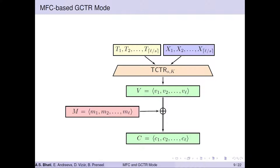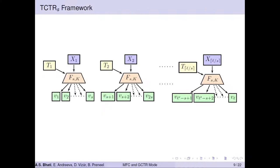In this slide, I'll define GCTR and simplify it. GCTR can clearly be seen as a generalization of counter-mode, where the key stream is generated using a framework called TCTR — the tweakable CTR framework — that takes a tweak sequence and an input sequence, and gives a key stream V as output. This key stream, just like counter-mode, is then XORed with the message to generate the ciphertext. The TCTR framework consists of multiple multi-fork cipher calls, where block-by-block inputs and tweaks are used to generate concatenated outputs forming the key stream.